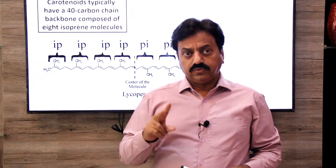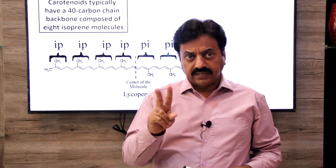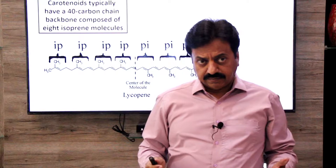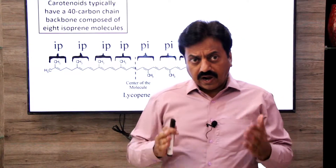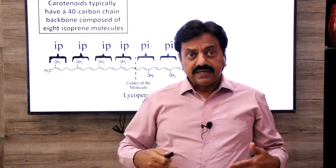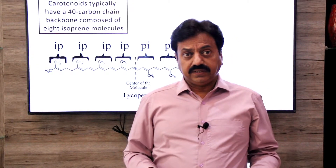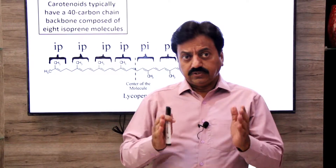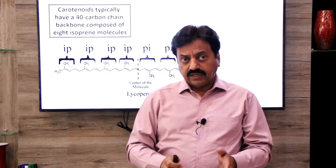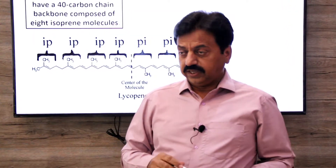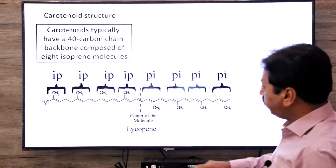2 isoprene units make a monoterpene, 4 isoprene units make a diterpene, and 8 isoprene units make a tetraterpene. So remember that carotenoids are tetraterpenes.